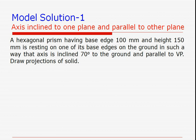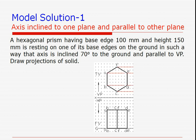In this situation a hexagonal prism is given whose axis is inclined to the ground. The initial position is chosen so that we get the true shape of the base first. Because it is a hexagonal prism, the axis is chosen to be perpendicular to the ground initially. For example, if the axis is finally inclined at 70 degrees to the ground, it will be perpendicular to the ground in the beginning. This is the initial position where the axis is perpendicular to the ground.